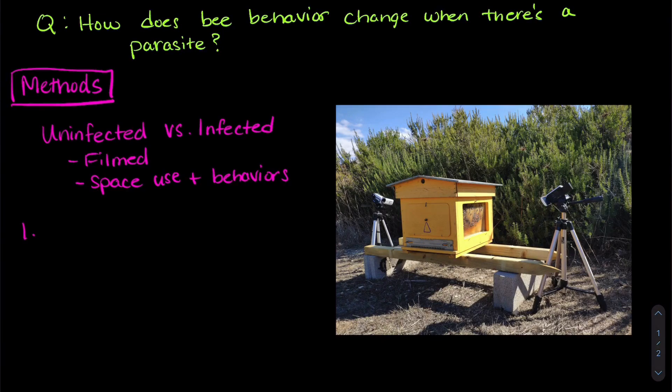In the first experiment, the researchers constructed artificial beehives with honeycomb frames. Some of them ended up infected naturally with the parasite and others did not.